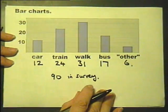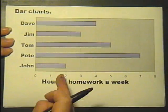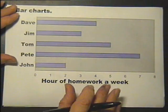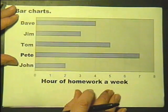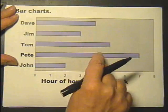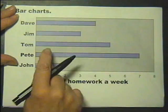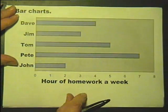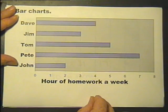So that's a straightforward bar chart. Now the previous one was a vertical bar chart and this is a horizontal bar chart. Similarly, I think it's obvious what this is telling you. Number of hours of homework done a week — Dave did 4 hours a week, Jim did 3 hours a week, Tom did 5 hours, Pete did 7 hours, and John did 2 hours of homework in one particular week. I think that's pretty straightforward.